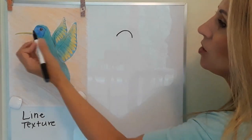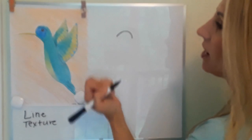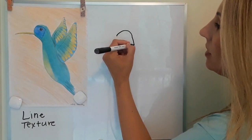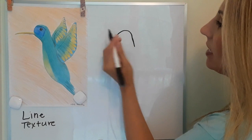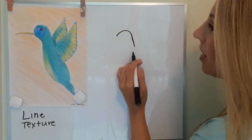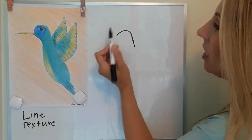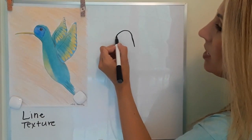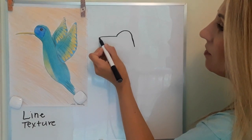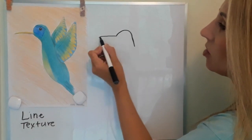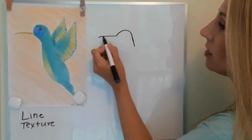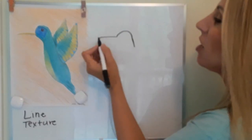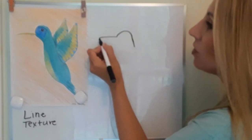The very first step is going to be an upside-down U shape for the head, and then we want to just extend that a little bit with a slightly diagonal line. Then we're going to draw the beak — it's very long with just a little bit of a curve to it so it can really get into the flowers.